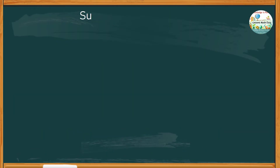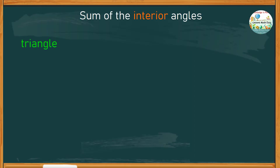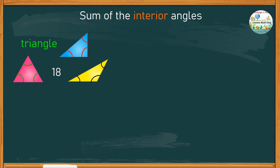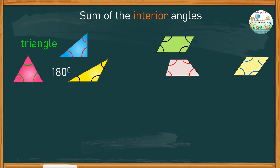It is common knowledge that the sum of the interior angles of triangles, no matter what type, is equal to 180 degrees. And for quadrilaterals, the sum of the interior angles is 360 degrees.